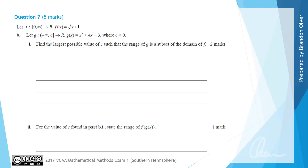For part b we now have the function g with a domain of negative infinity to c included, with the rule g of x equals x squared plus 4x plus 3, where c is a number less than 0. For part b(i) we are asked to find the largest possible value of c such that the range of g is a subset of the domain of f.